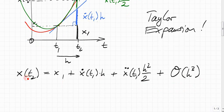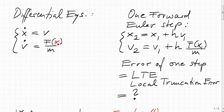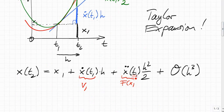Now we have a nice expression for the position after the step, and we do know the quantities in it. The first derivative of x with respect to time at the start is simply the velocity we're starting with. The second derivative of x with respect to time is the first derivative of the velocity, which is the force at that initial point x(t1) over m. So the exact position is: x1 + v1·h + f(x1)/m · h²/2 + O(h³). All of these terms — initial position, initial velocity times step size, force at initial position over mass times h²/2 — can be computed.